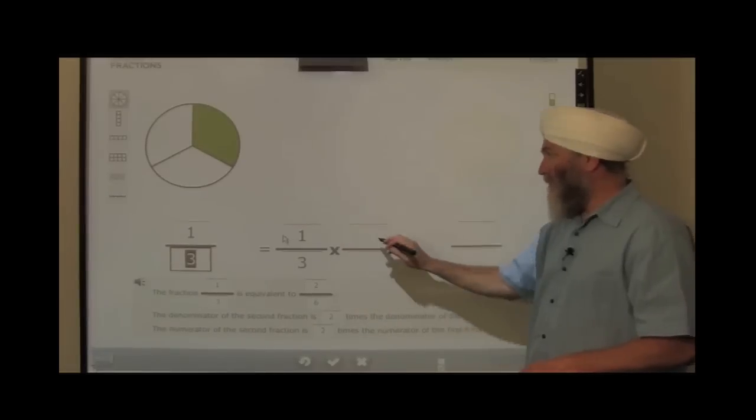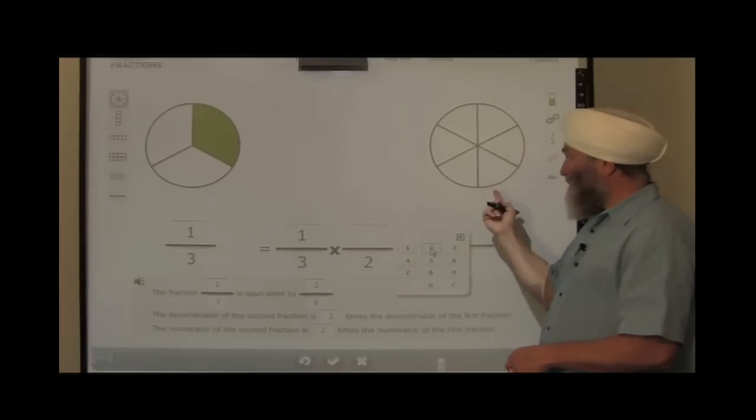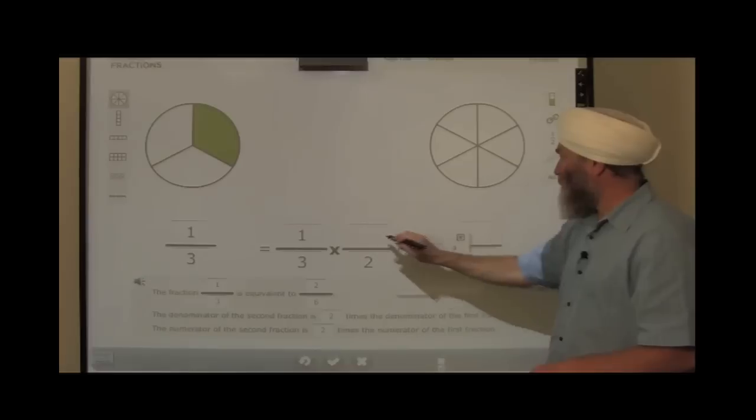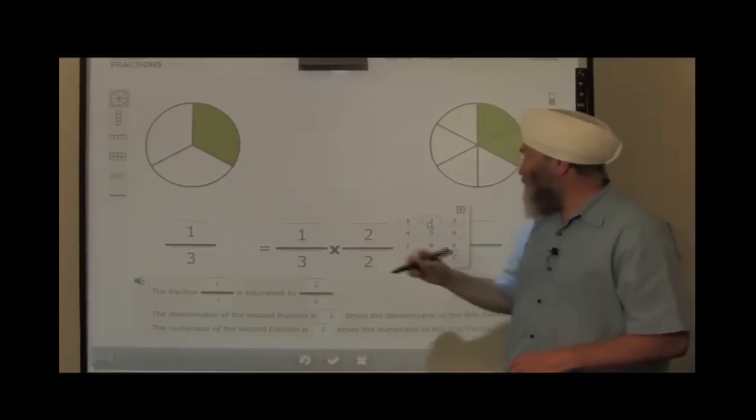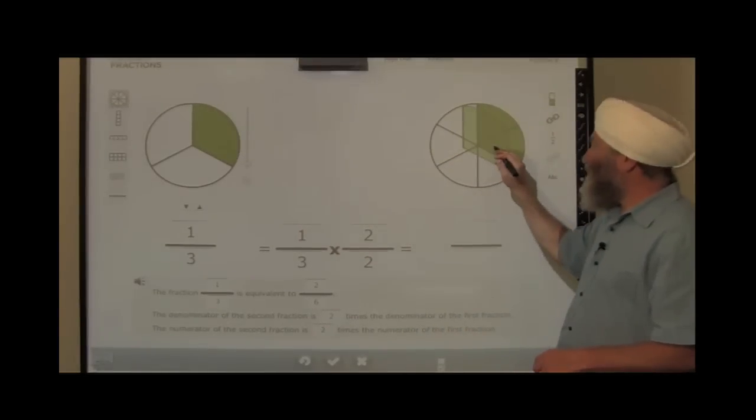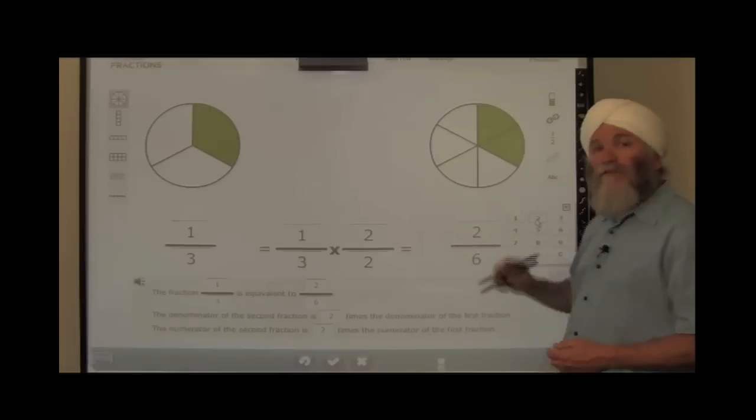There's one-third. Here's twice the denominator. Look at that. It worked. There are now six equal parts, and there are three equal parts in the original fraction. The numerator, twice the size. Two shaded parts versus one shaded part. It works. They can see the validation, the verification of their thinking right in front of their eyes. That's a good thing.